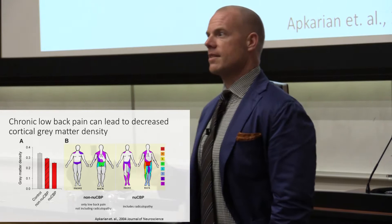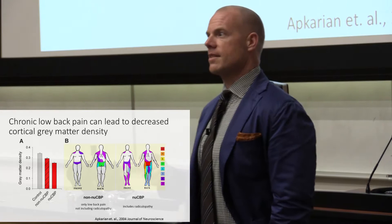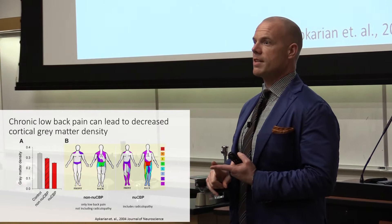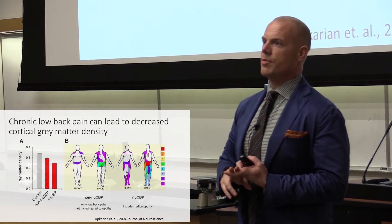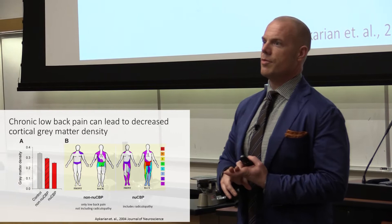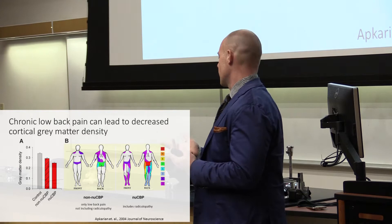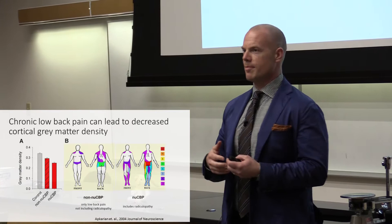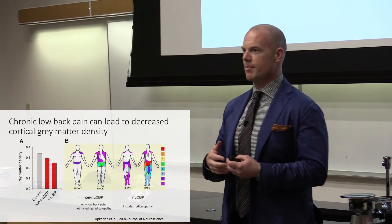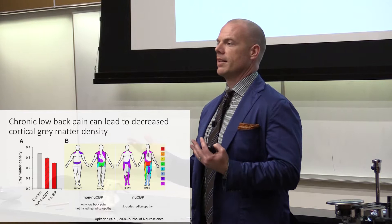One of the first studies of this type was done at Northwestern University by a very well-known researcher — originally a neurophysiologist who became a human brain imager — named Banyam Karim. He had a very simple but kind of revolutionary idea for the field, which stemmed from the very rich clinical literature demonstrating for many decades that people with chronic pain, especially severe chronic pain, have all kinds of other comorbidities that often lead to disability.